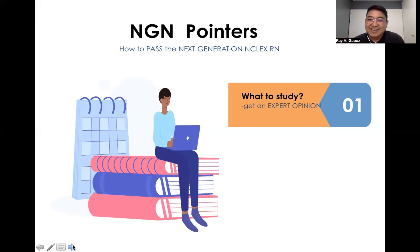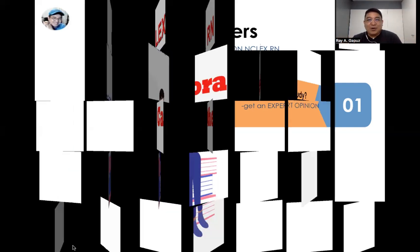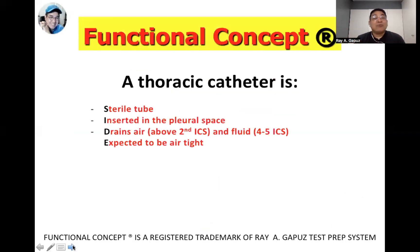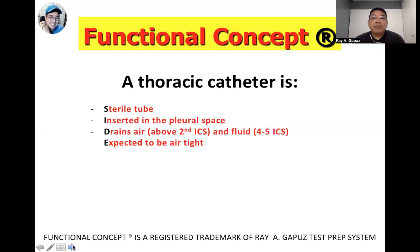At the Regapo system we're banking on 30-plus years of experience as a mentor since 1993. For this session I'm going to talk about the chest drainage system, specifically the use of the thoracic catheter. A thoracic catheter is a sterile tube inserted in the pleural space to drain air — if placed above the second intercostal space — or fluid, if placed between the fourth and fifth intercostal space. It is expected to be airtight.